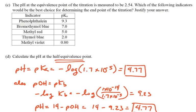Part C: The pH at the equivalence point of the titration is 2.54. Which of the following indicators would be the best? We want an indicator that changes color somewhere around 2.54. The pKa tells us the pH at which each of these indicators changes color. Phenolphthalein changes way up at 9, bromothymol blue at 7, methyl red at 5, thymol blue somewhere around 2, and methyl violet at 0.80.